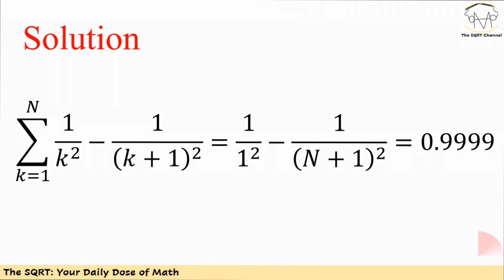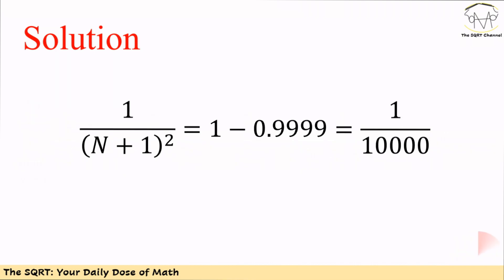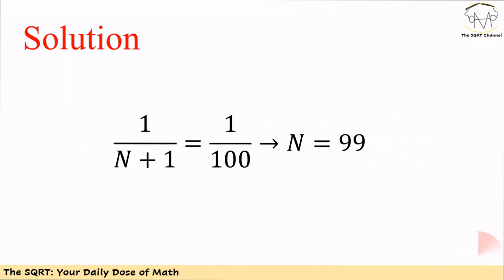The whole equation is equal to 1 minus 10⁻⁴, and then we can simplify it further by removing 1 from both sides. If we do so, we are going to end up with (n+1)² equal to 10⁴. As you can see, n is equal to 99.